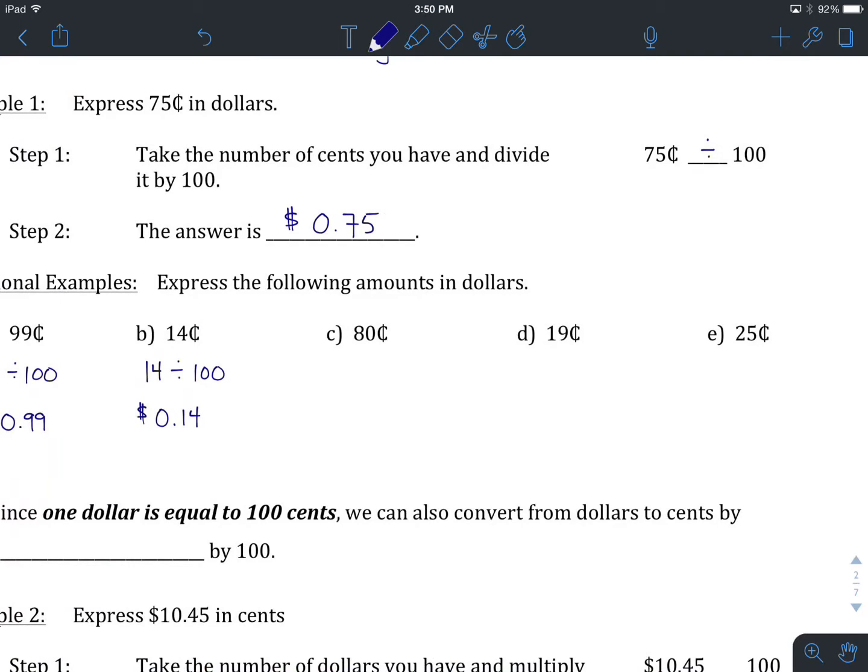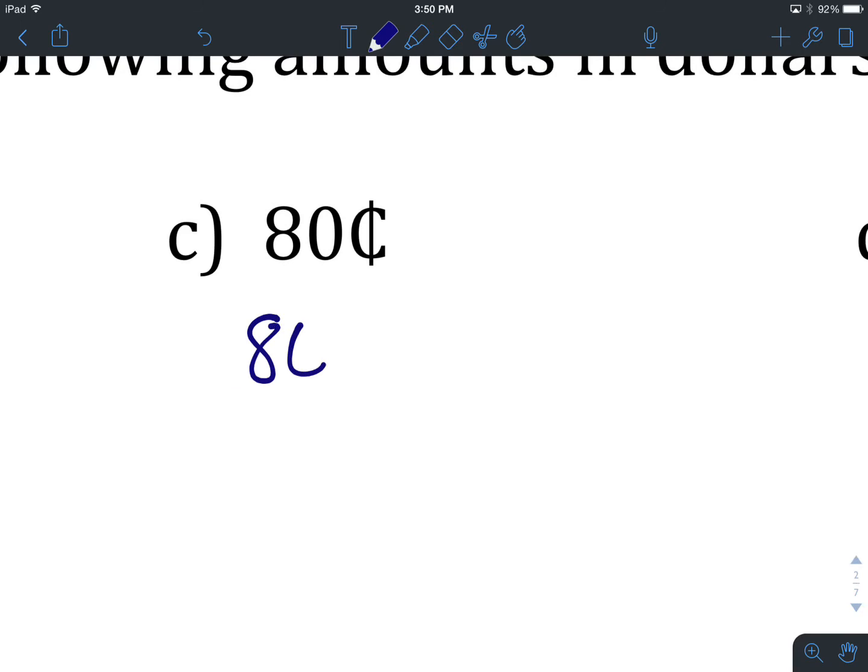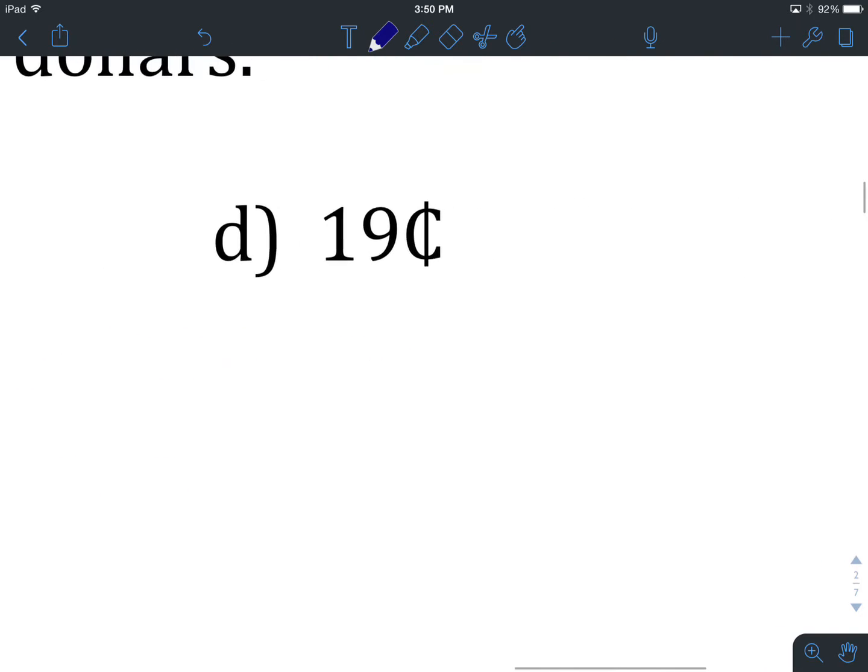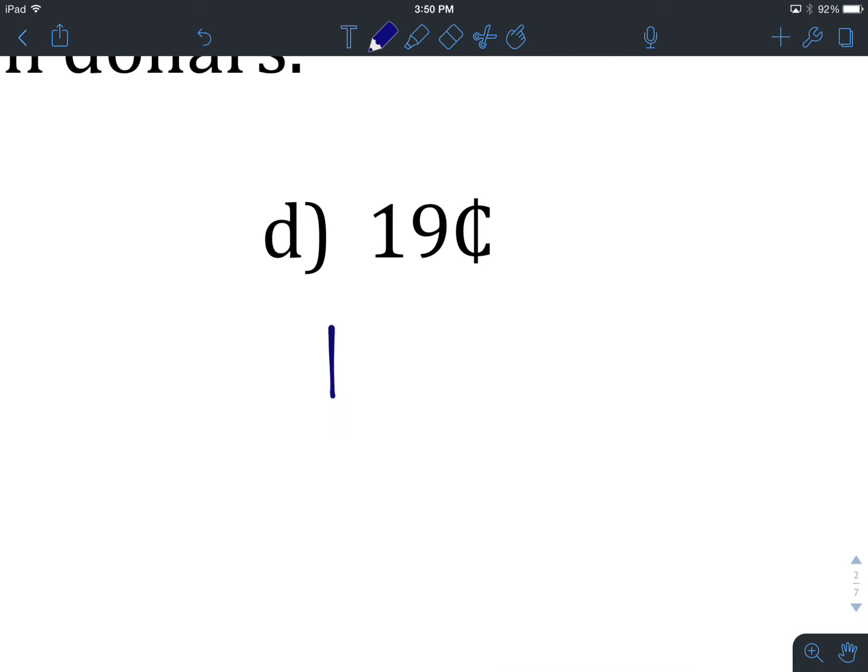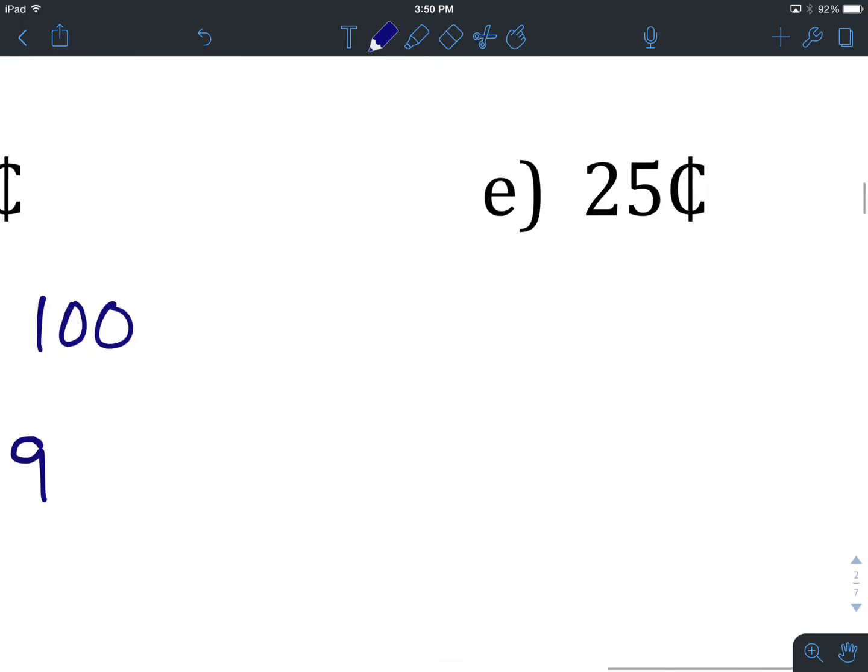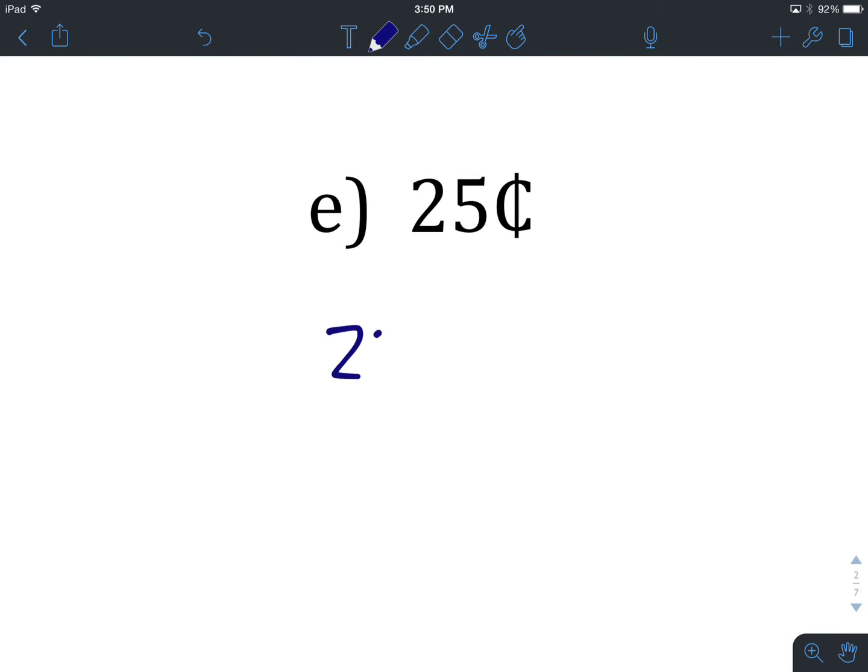So you've come back, you've tried C, D, and E. Let's go over these quickly. 80 cents expressed in dollars: we take the number of cents we've been given, divide by 100. Our new notation is dollars, and our answer is $0.80. 19 cents in dollars: we take the number of cents, divide by 100, which gives us $0.19. And last but not least, 25 cents expressed in dollars: we take the number of cents, divide by 100, giving us $0.25.